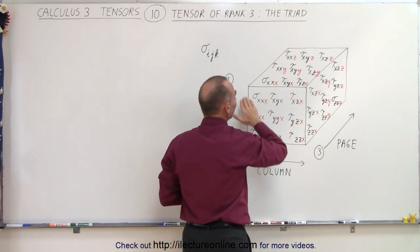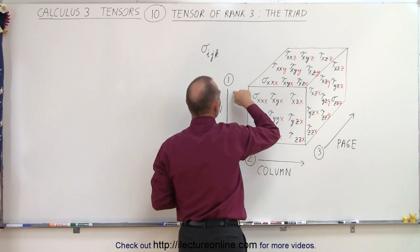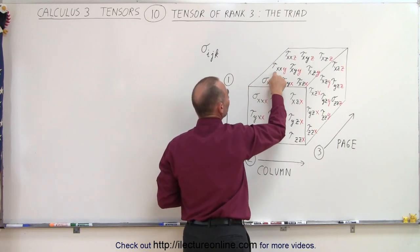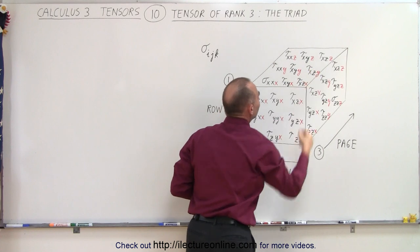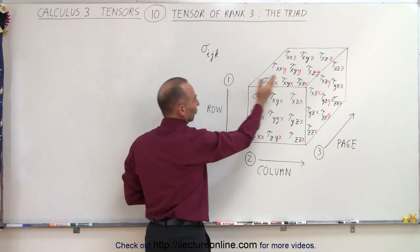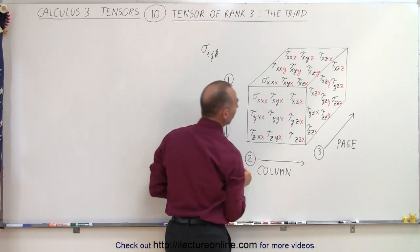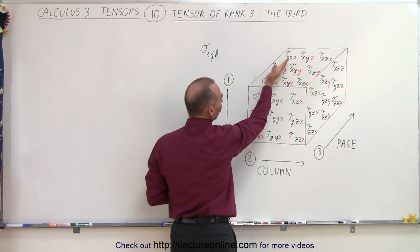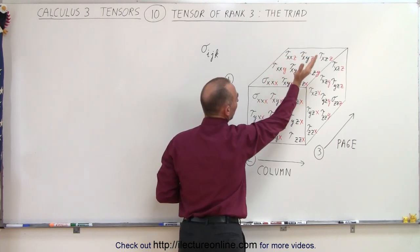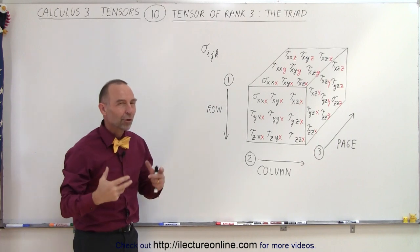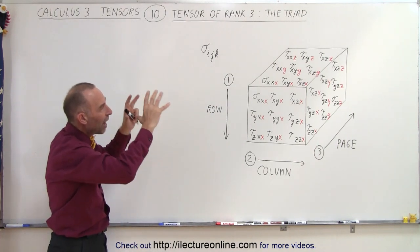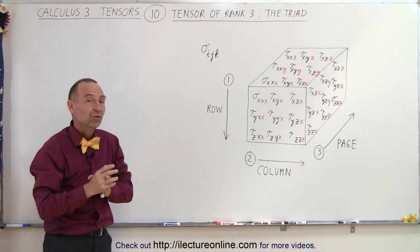Notice that we're at the very top, so that means that's all represent the first row, so the first subscript of all nine components would be X. And then going from left to right to represent the columns, notice the second subscript is X for the first column, Y for the second column, Z for the third column. So hopefully that gives you a little bit more insight of how the components are laid out for a triad.